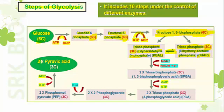Because two PGAL molecules participate in the rest of glycolysis, at the end we get two pyruvic acid molecules — one from the direct conversion of PGAL, and another from the DHAP converted to PGAL. So totally two PGAL molecules participate in the remaining steps, yielding two pyruvic acid molecules.